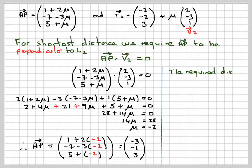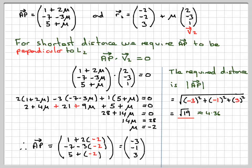AP will be equal to, substituting minus 2 into here: 1 plus 2 times minus 2, minus 7 minus 3 times minus 2, and 5 plus minus 2, giving minus 3, minus 1, and 3. The required distance is the magnitude of AP, which is the square root of minus 3 squared plus minus 1 squared plus 3 squared, that's 9 plus 1 plus 9, which is root 19, approximately equal to 4.36.